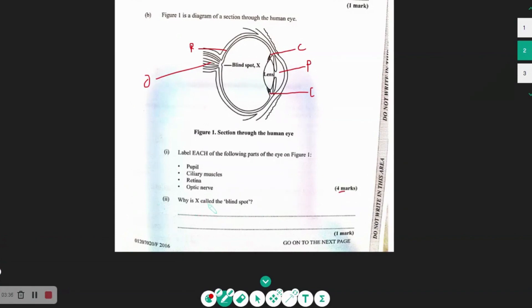So part two. Why is X called the blind spot? So here is X. Look at where X is located. So we know at the retina, what allows us to be able to see or to detect light is the sensory cells that are there, which are our rods and our cones that allows us to see color and as well as black and white and all the shades in between. So that would be all the shades of gray in between that black and white.